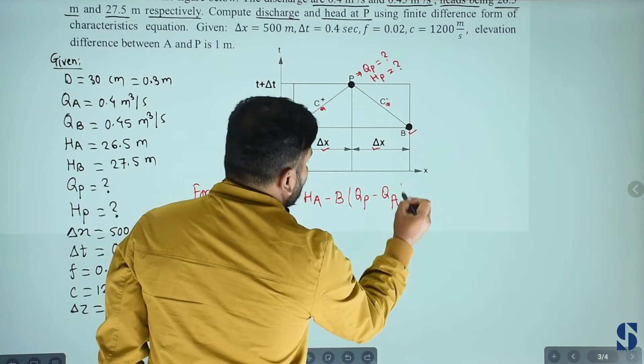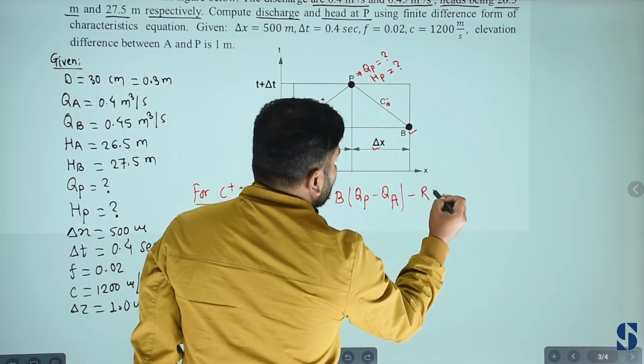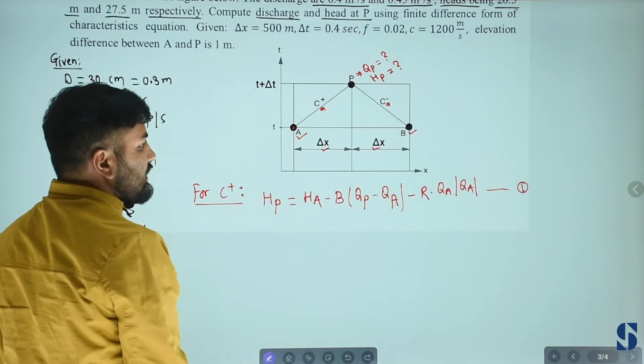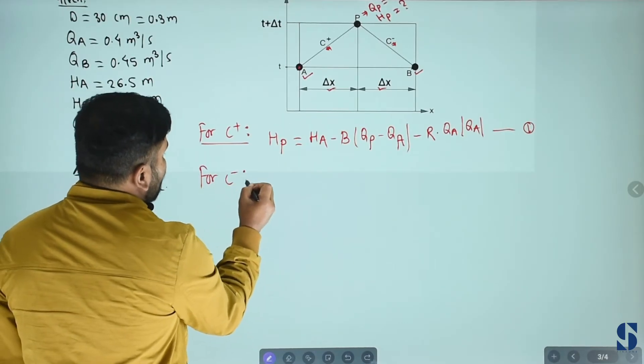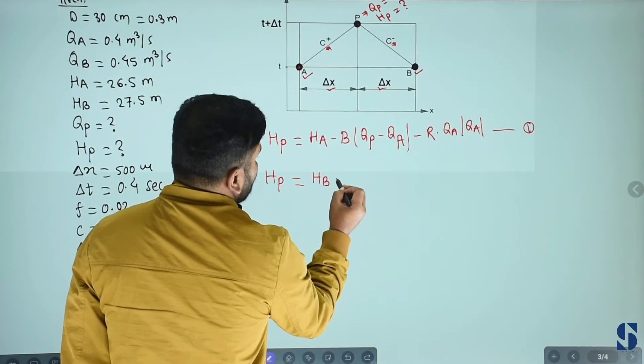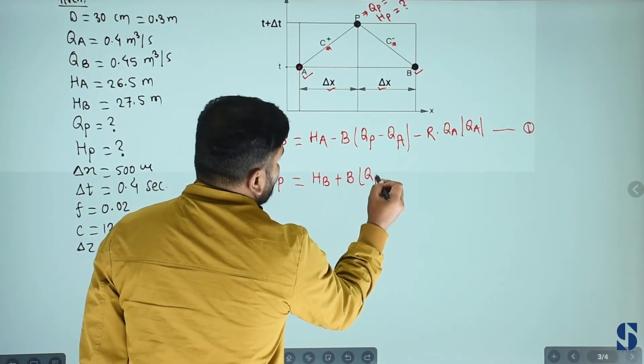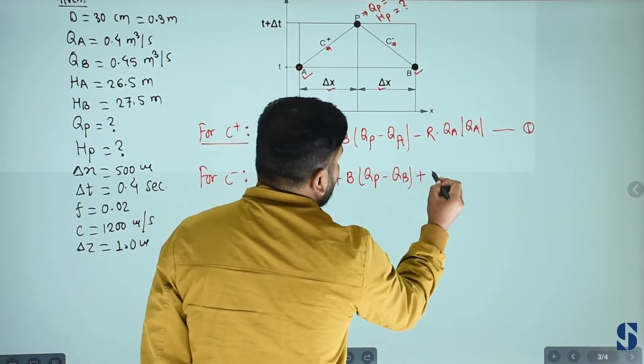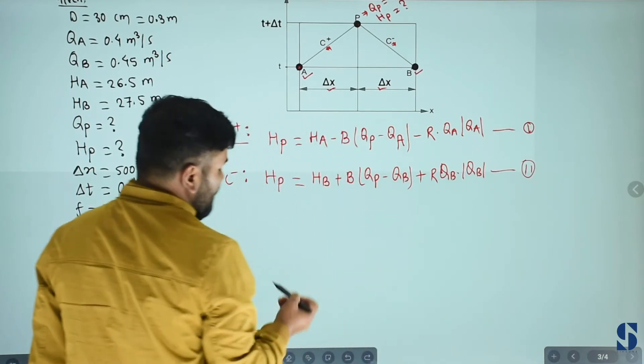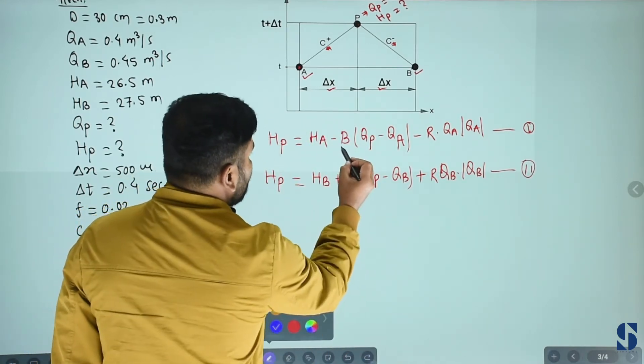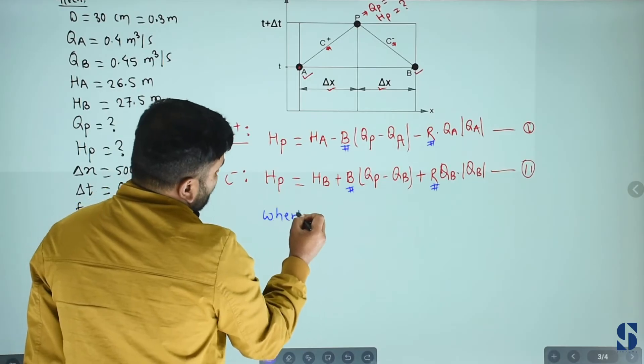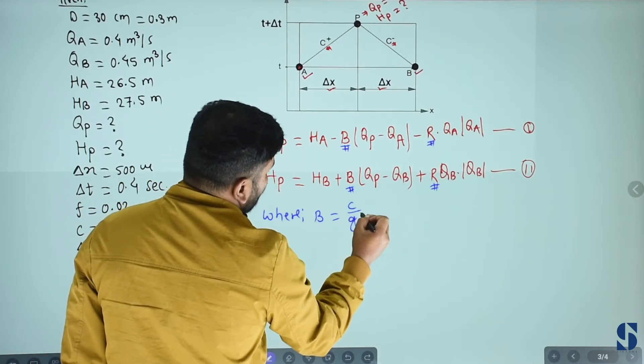Minus R into QA into modulus of QA. This equation follows C plus characteristics. For C minus characteristics, the finite difference form of equation is HP equals to HB plus B times QP minus QB.